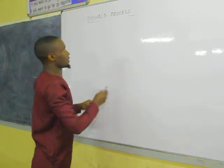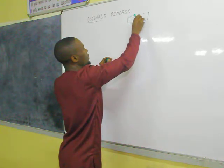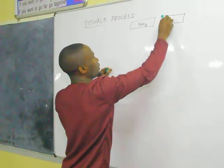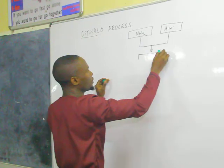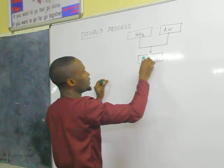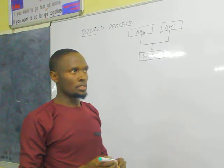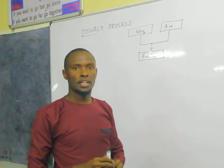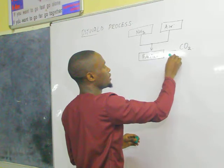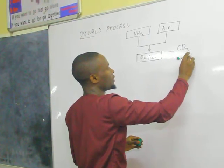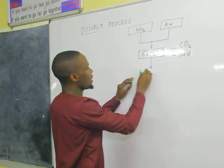I am going to break this process into chambers. Ammonia gas with air is taken to the first chamber, and this chamber is called a purifier. In the purifier, the waste products or substances that may poison the catalysts used in this process are removed. These substances include carbon monoxide and dust particles.